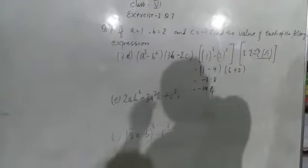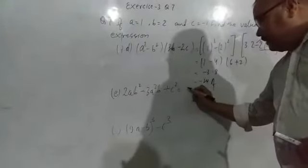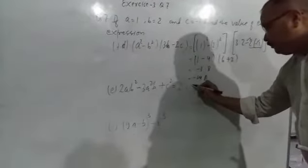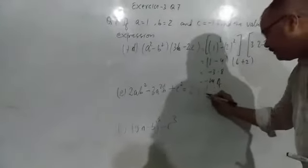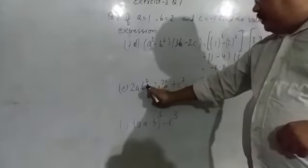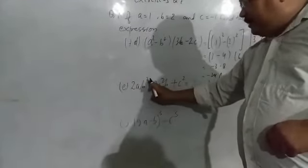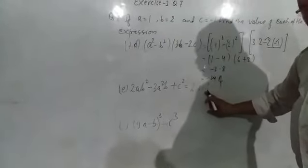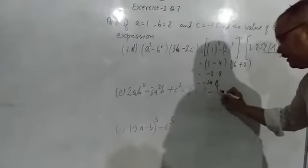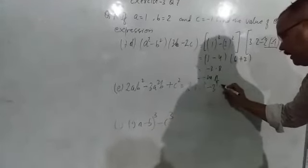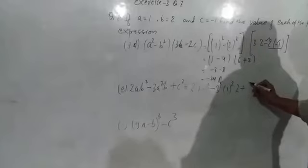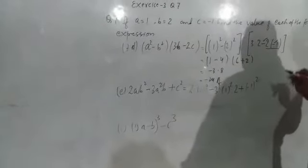Similarly, the next sub-question: 2 into A value is 1 and B's value is 2, whole square. See here — the square is just only for B, not A, because here it is not whole square, only B squared. So that's why here B means 2, and 2 squared is written here. So plus — sorry, minus 3 into A squared, it means 1 squared, and B means 2. Similarly, plus C squared, so minus 1 squared.